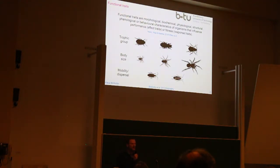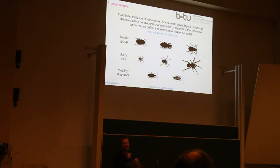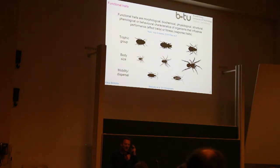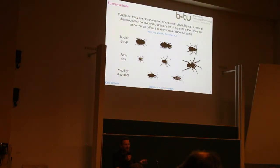Looking at some groups we study intensively: in ground beetles, some species are almost strictly granivorous, feeding exclusively on plant seeds; others are omnivorous, feeding on seeds and live prey; and some are almost strictly carnivorous. Within ground beetles alone you have very different trophic groups. Body size is another key trait — in a spider community you have small, large, and intermediate-sized species. Dispersal and mobility also matter: some true bug species are brachypterous and can't fly, while others are macropterous with fully developed wings.